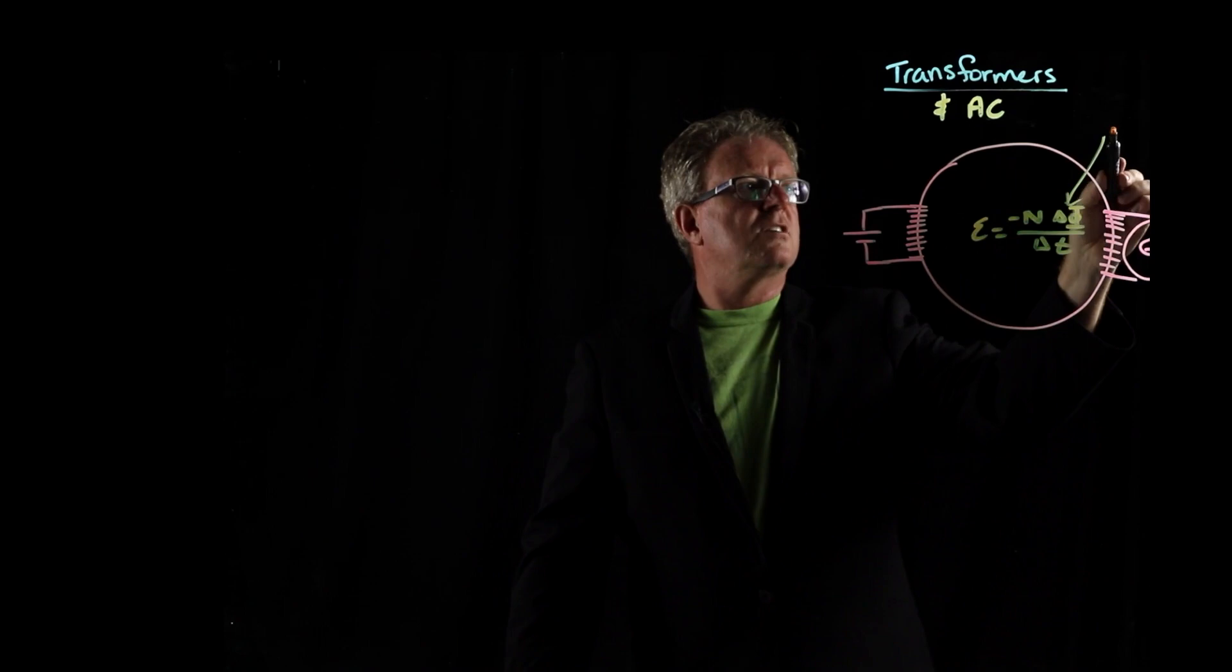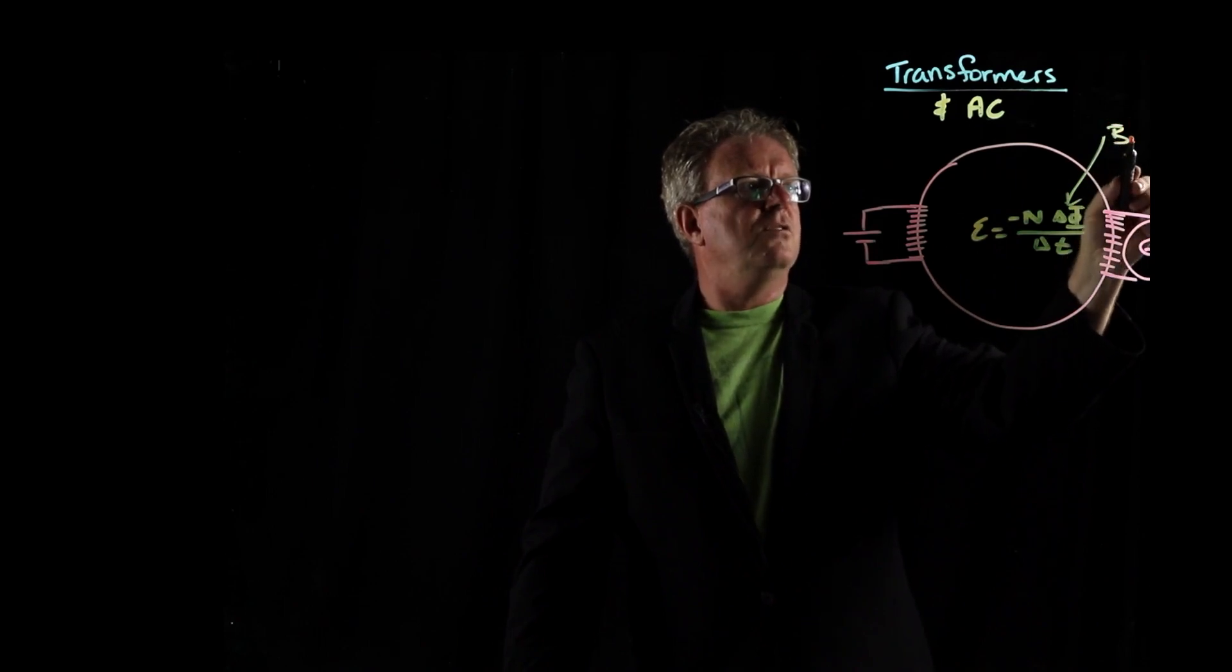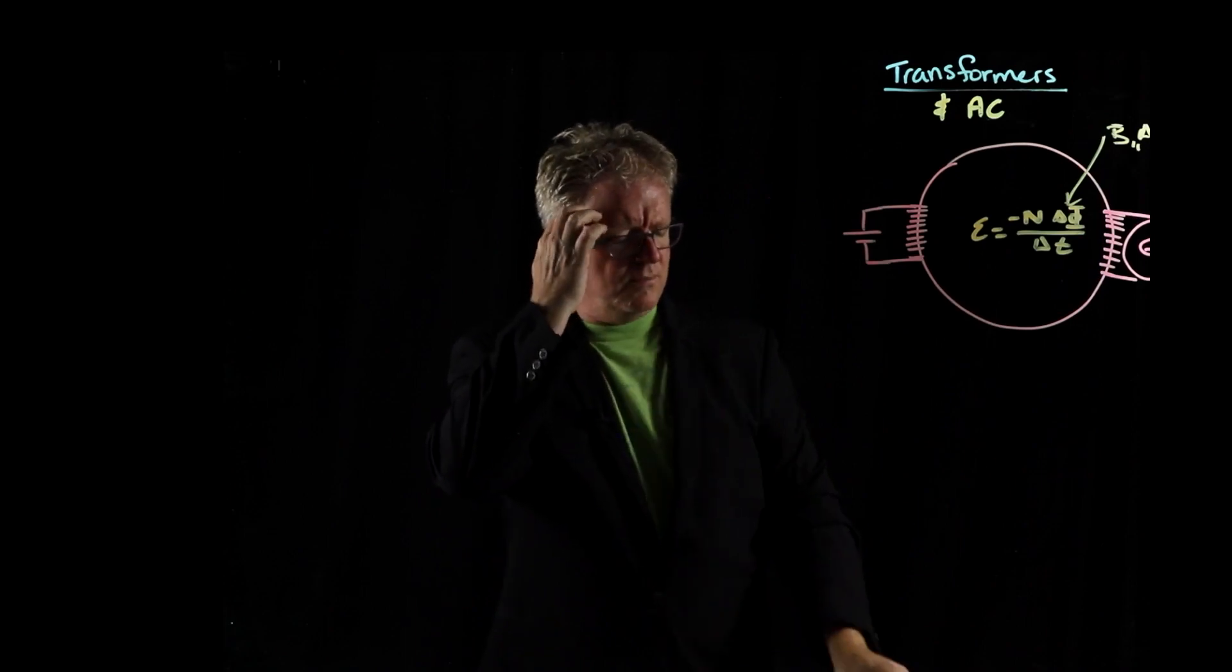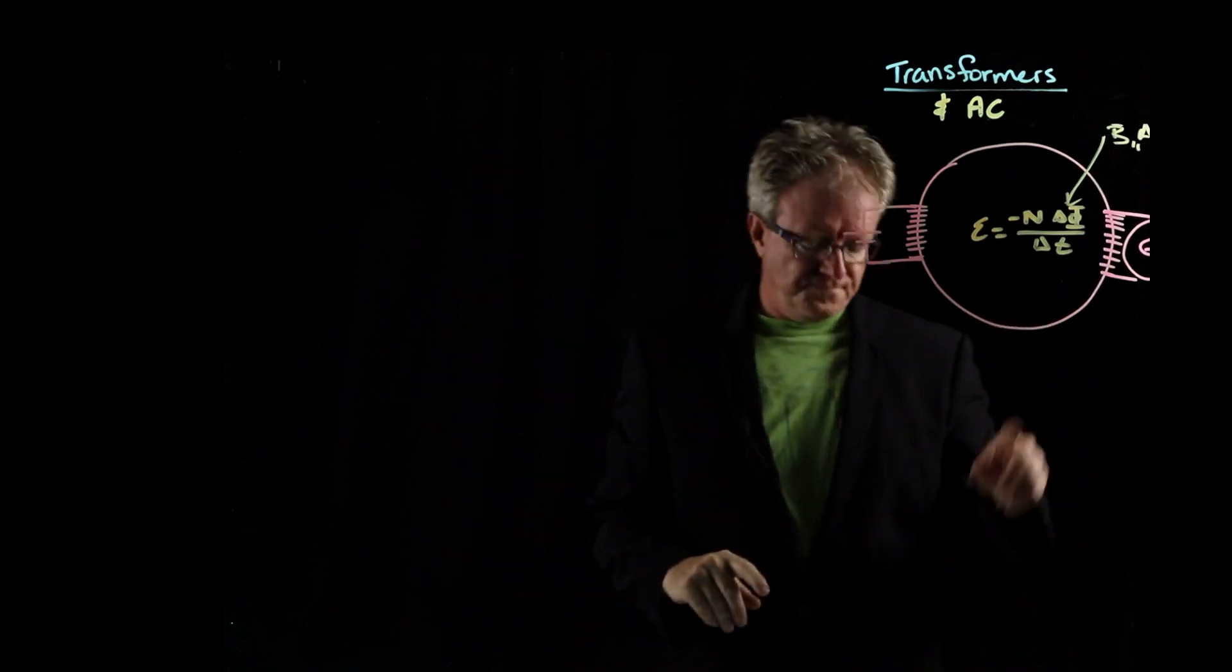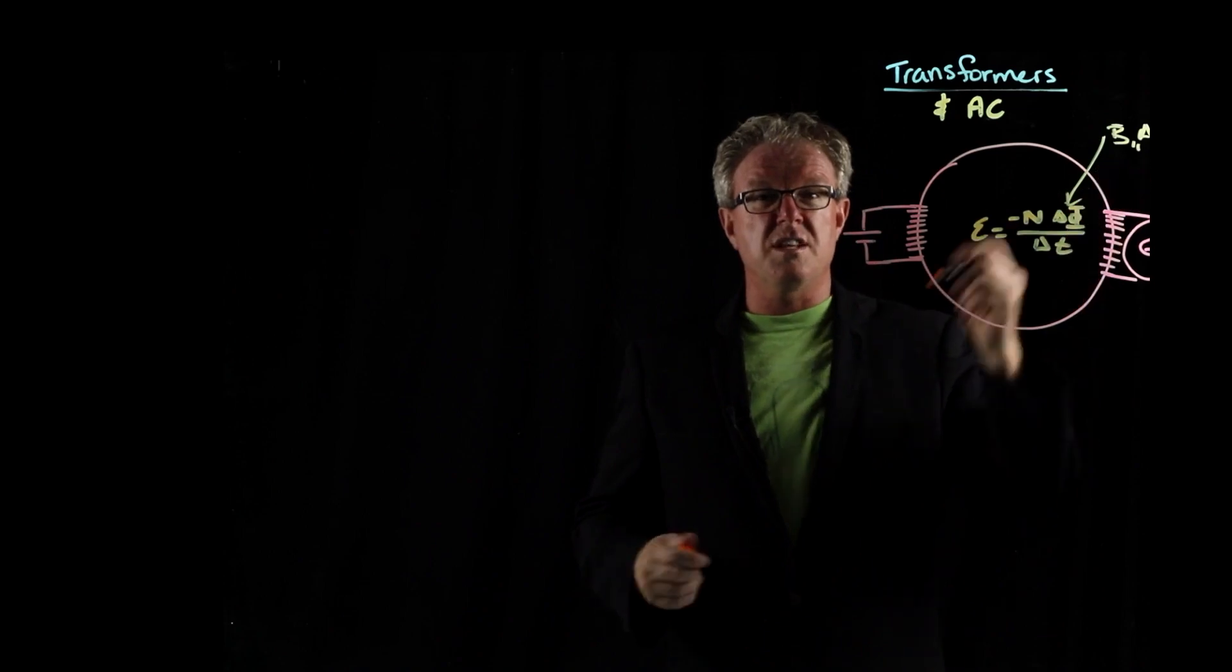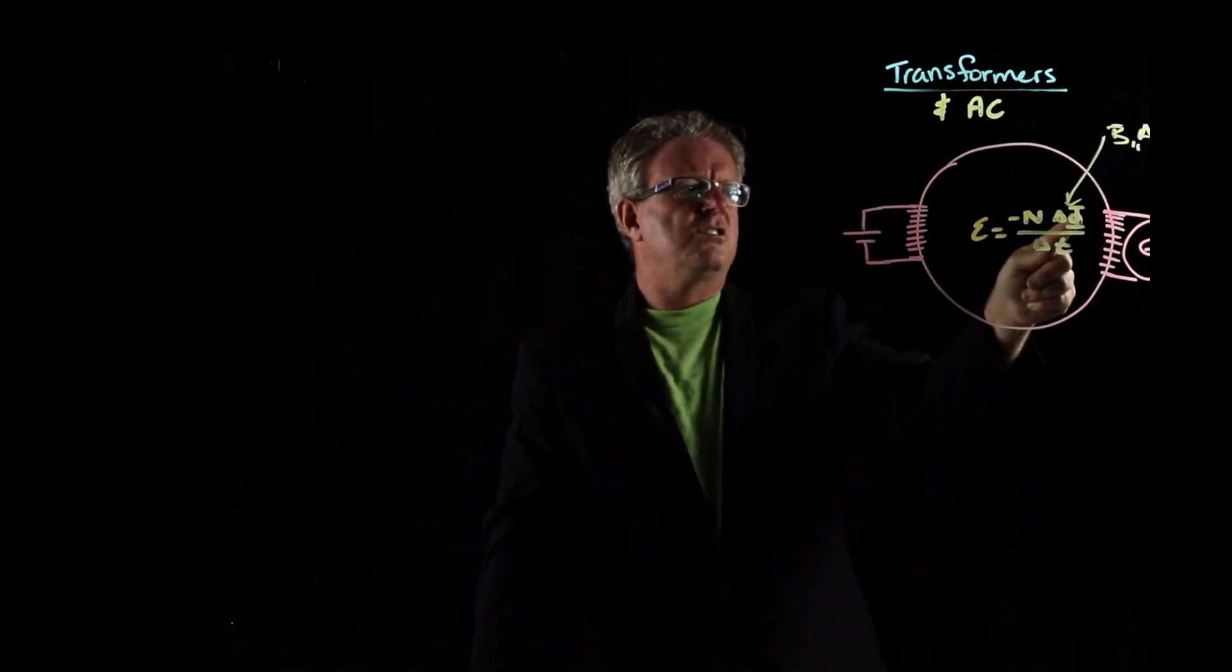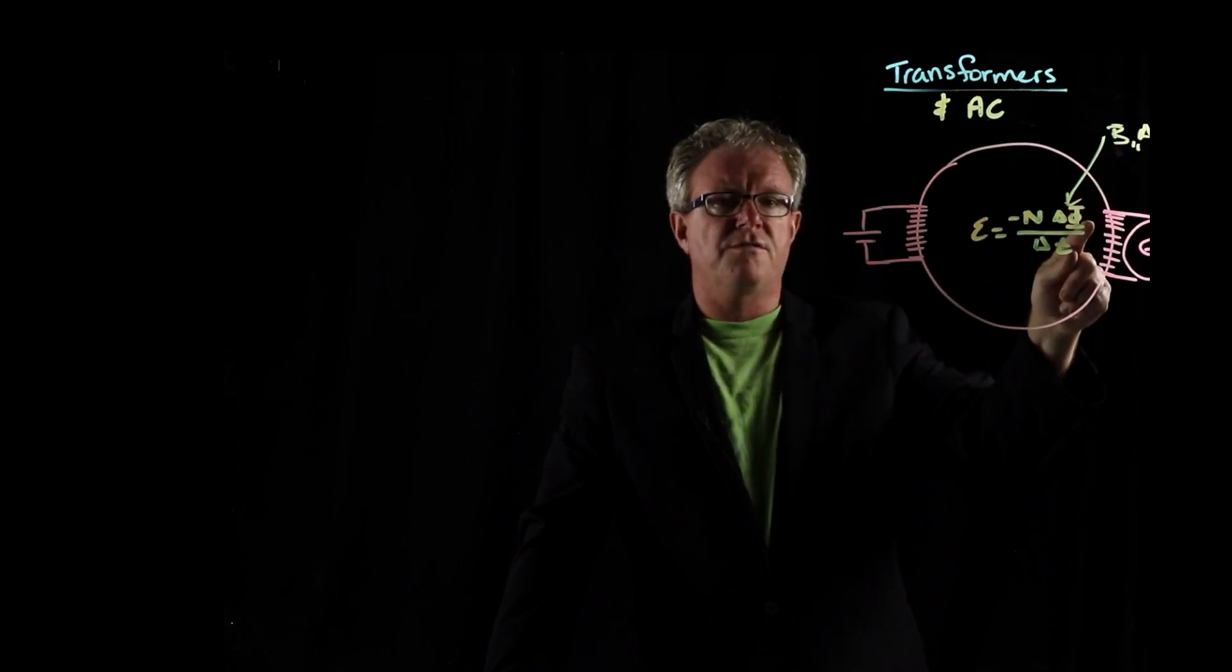And that change in flux was magnetic field times a, the area vector of the field. And so we can change, and we can put the cos theta in there if we want to as well. But if we change the magnetic field, we change the flux.